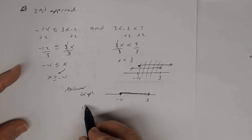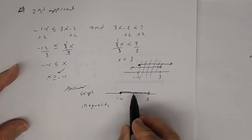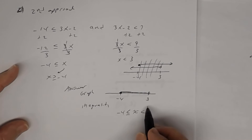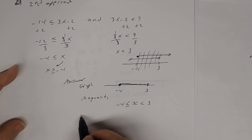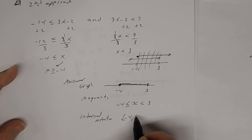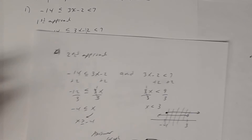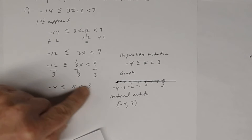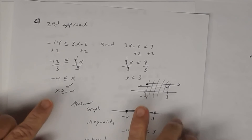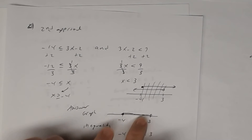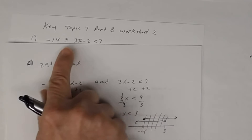The inequality notation is negative 4 ≤ x < 3, and the interval notation is bracket negative 4, comma 3, parenthesis — same result as the first approach. Most students use the first approach because it's more efficient. If you use the second approach, remember you must determine the intersection — the AND statement — of those two graphs to get the solution of the compound inequality.